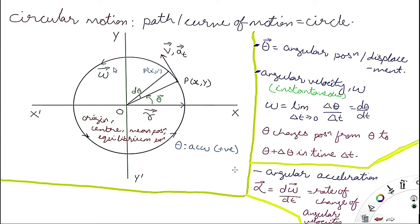In the figure, a particle executes circular motion with angular velocity omega in the anticlockwise direction, which is taken as positive. The angular displacement theta is also positive. Point P with coordinates (x, y) is the initial position, and P' with coordinates (x', y') is the new position. O is the center of the circle. R is the position vector (radius vector) from the center to the particle.